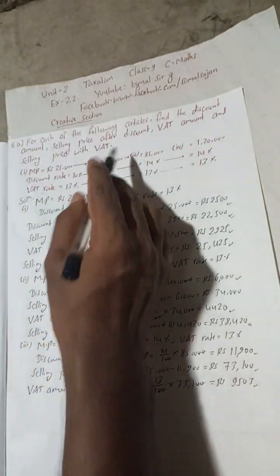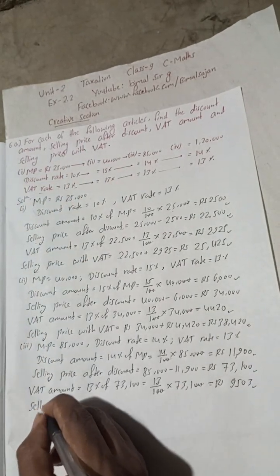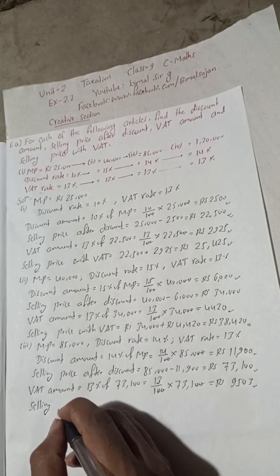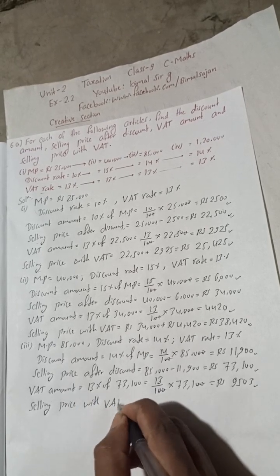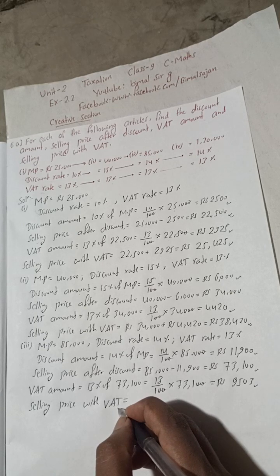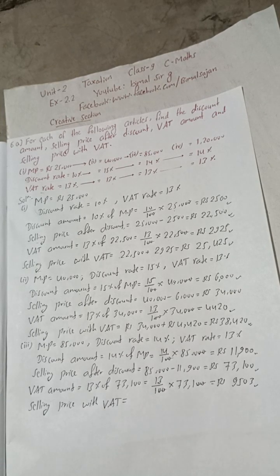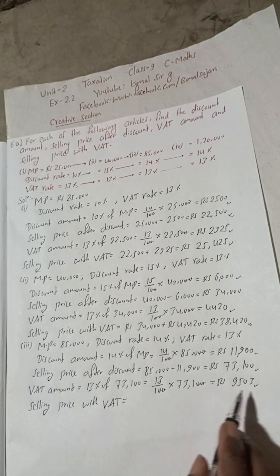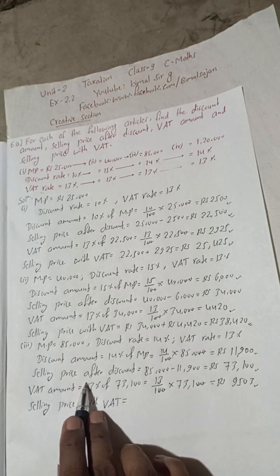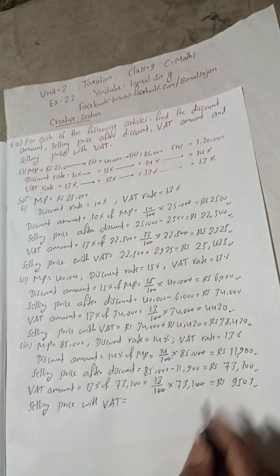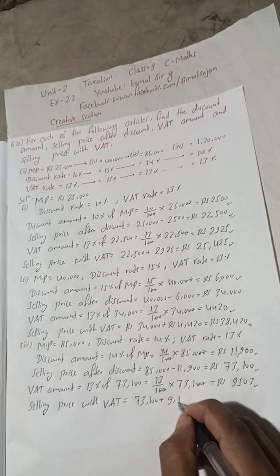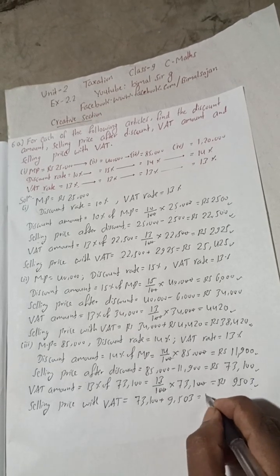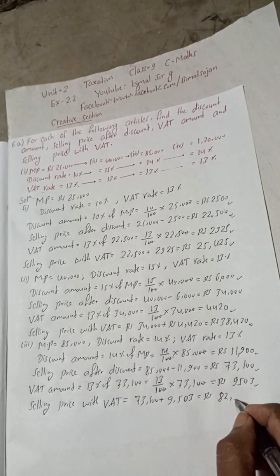Now selling price with VAT. VAT amount we got. Selling price with VAT equals selling price after discount plus VAT amount: 73,100 plus 9,503. When we add both, we get Rs 82,603.